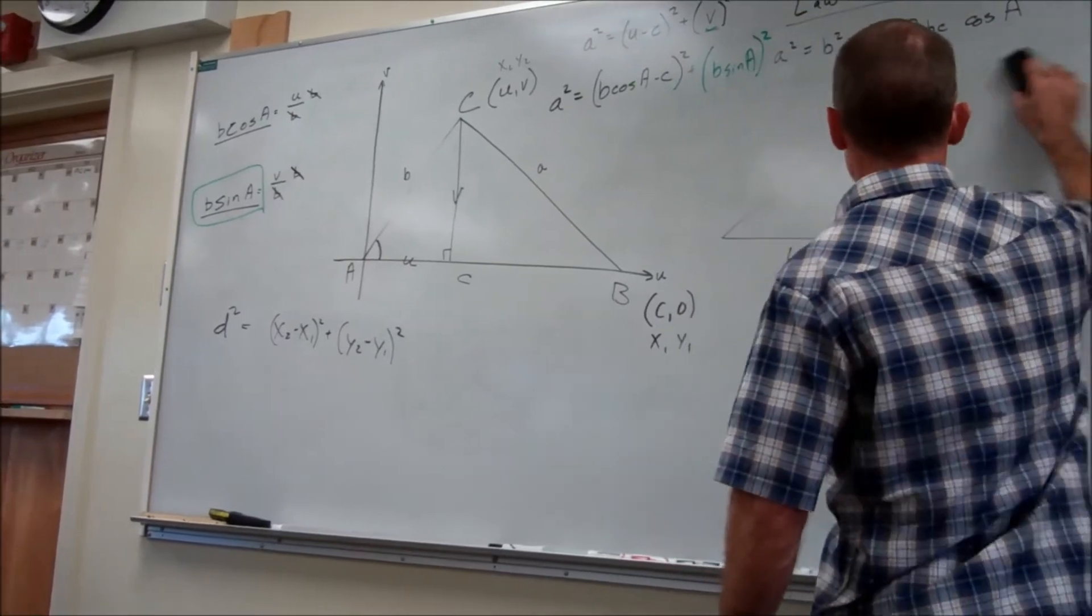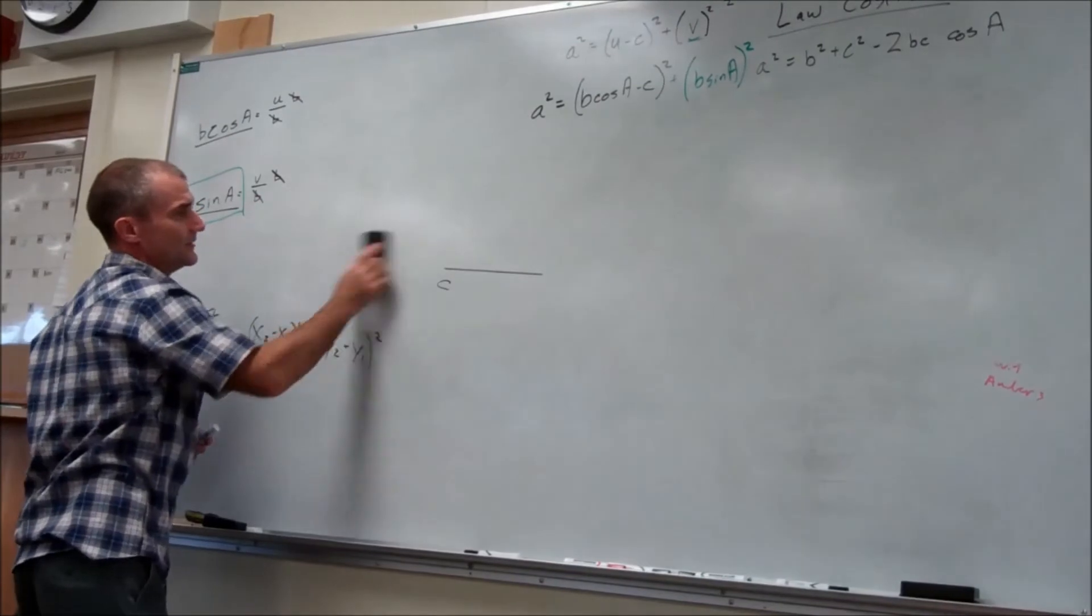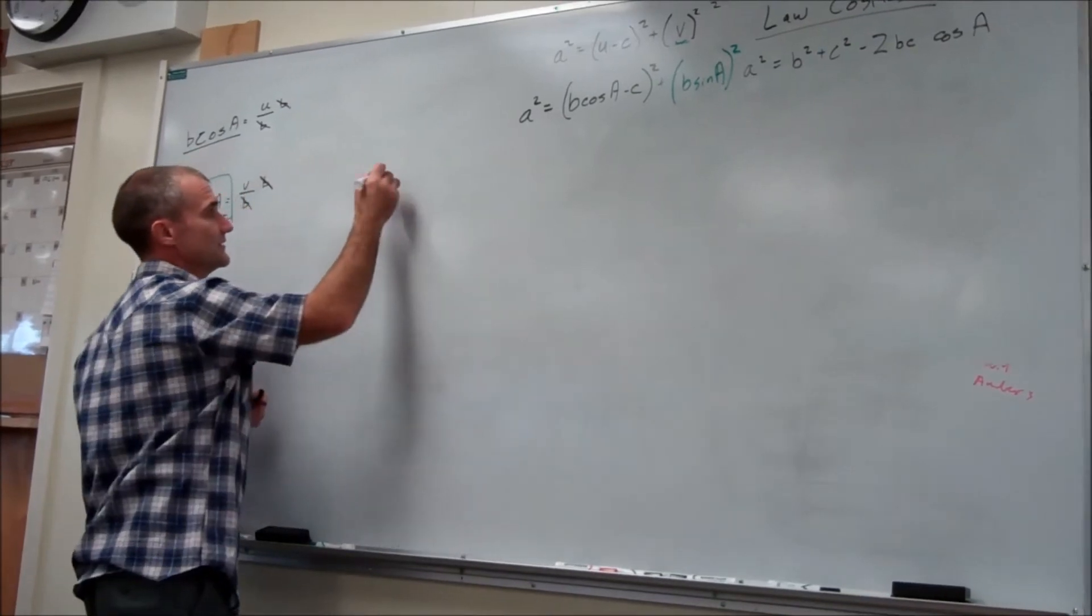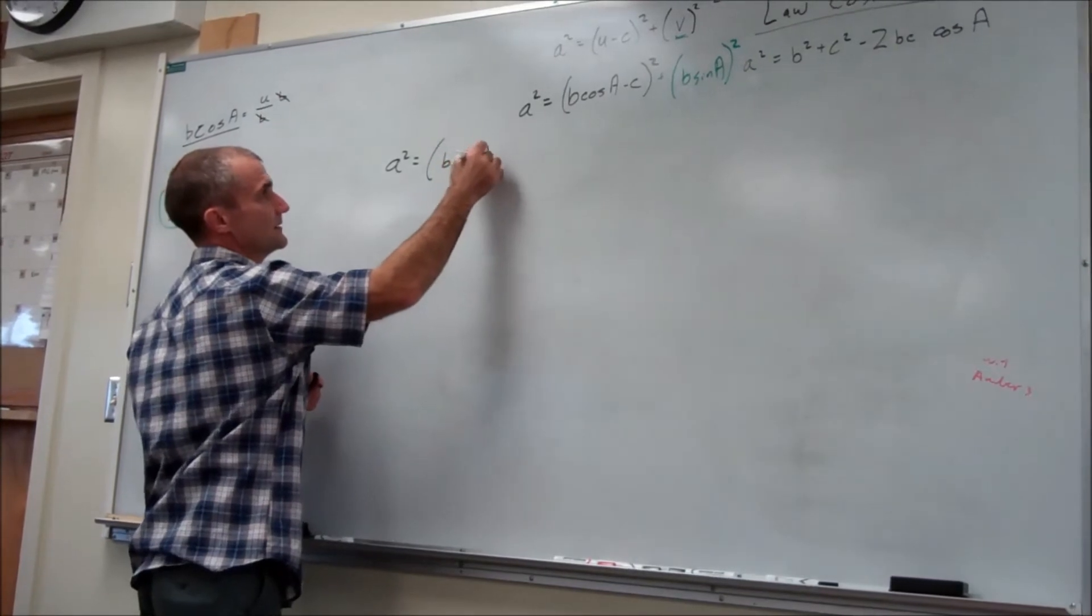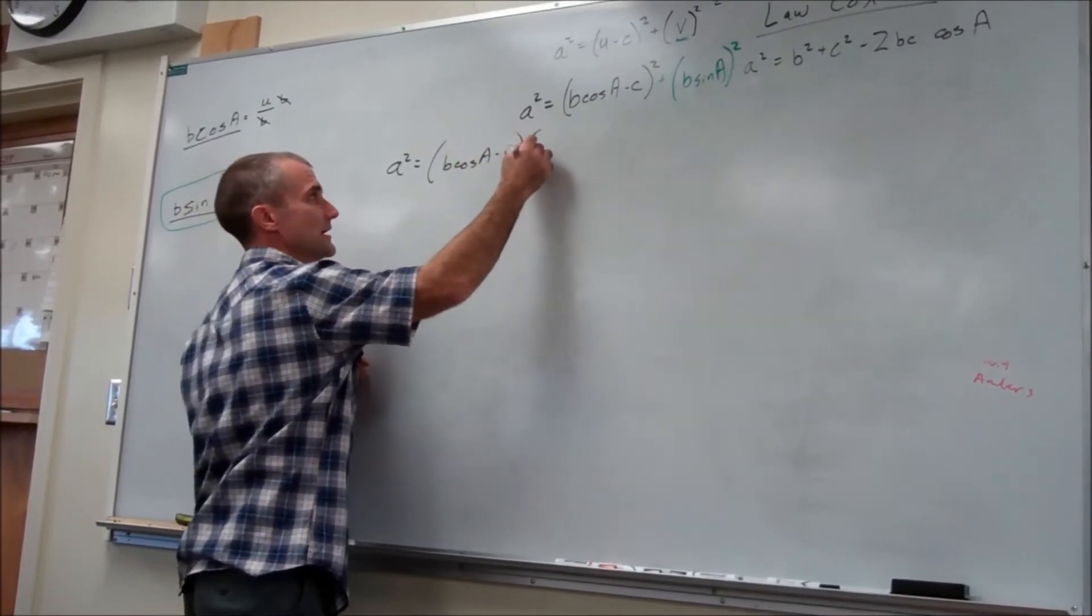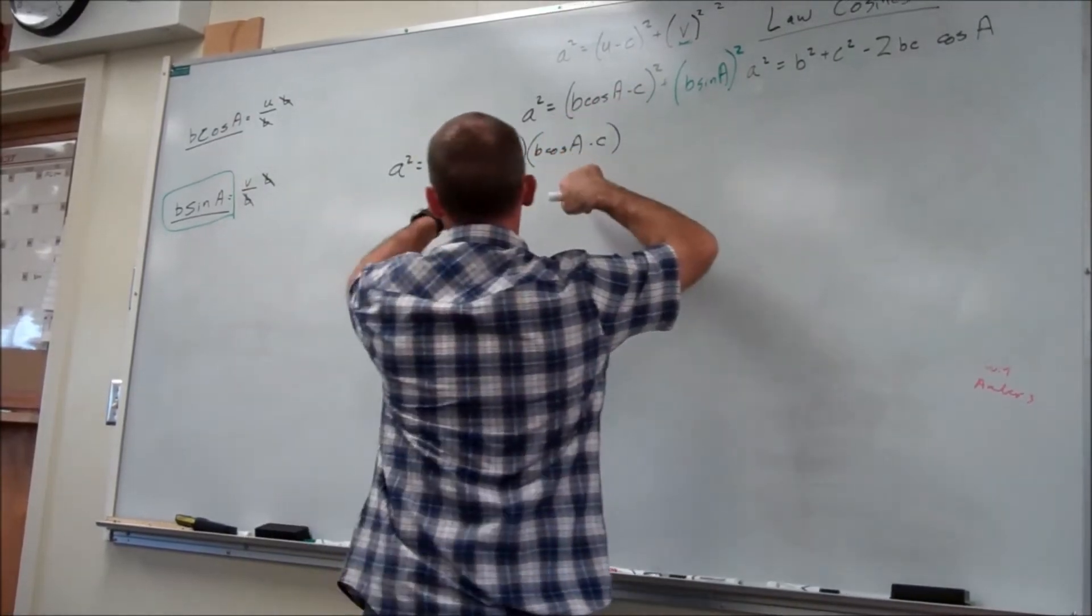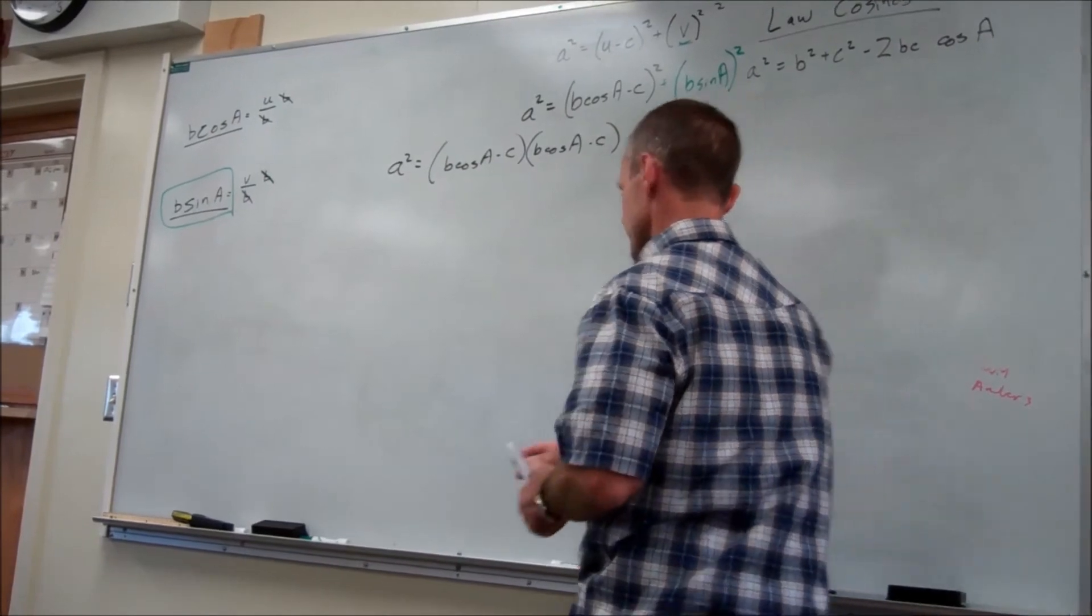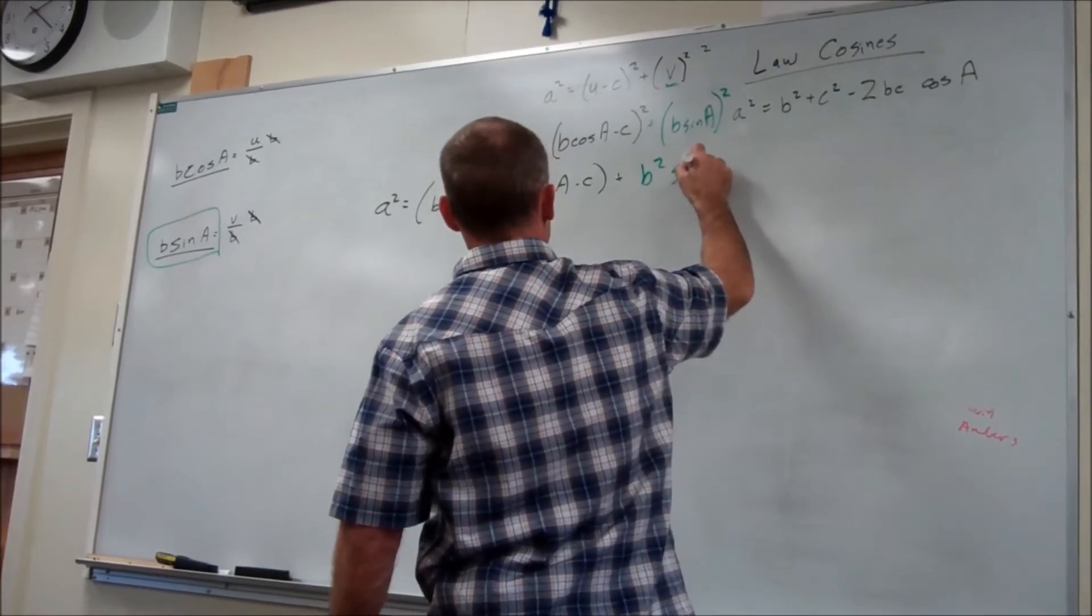Okay, let me erase some of this. So now what I want to do is foil that out. So I have a squared is equal to b cosine of a minus c. So b, quantity squared, which is b cosine of a minus c times b cosine of a minus c, right? This thing squared is this thing times this thing. Plus, this right here, I distribute that square through this to get b squared, sine squared of a.